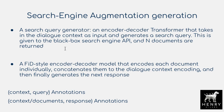Here's the big idea behind internet augmented dialogue generation. First, a search query generator — an encoder-decoder transformer — takes the dialogue context as input and generates a search query. That query is sent to the Bing Search API and N documents are returned. For supervision, they use context-query annotations from a new dataset introduced in the paper. Second, a Fusion-in-Decoder style encoder-decoder model encodes each returned document individually, concatenates them to the dialogue context encoding, and generates the response. Both parts are trained with supervised learning from the collected dataset.